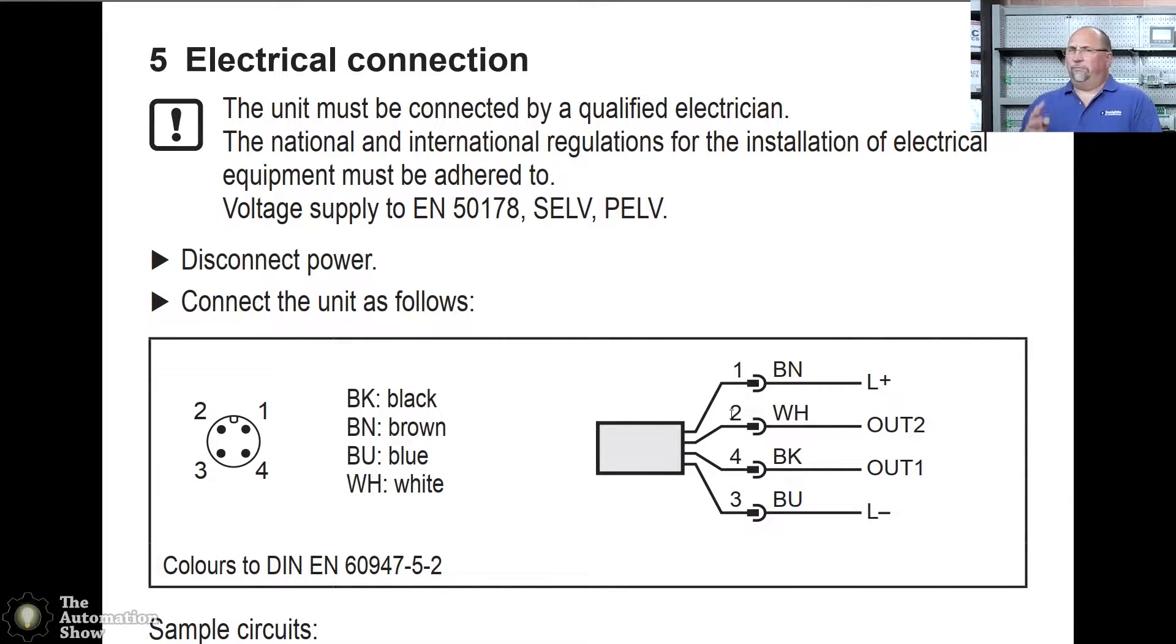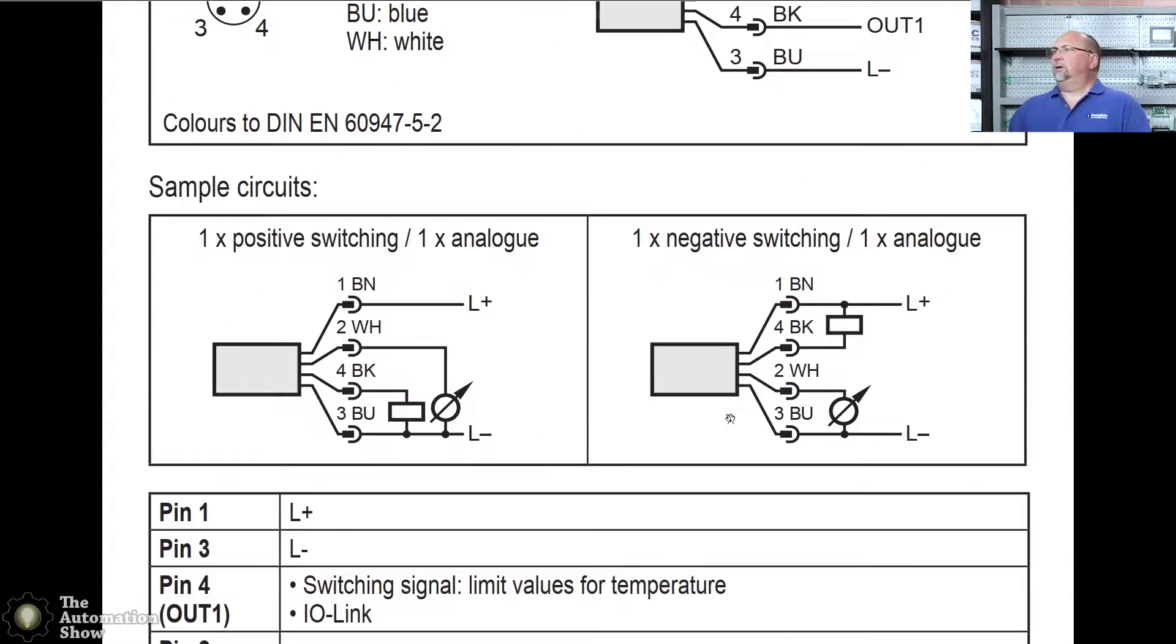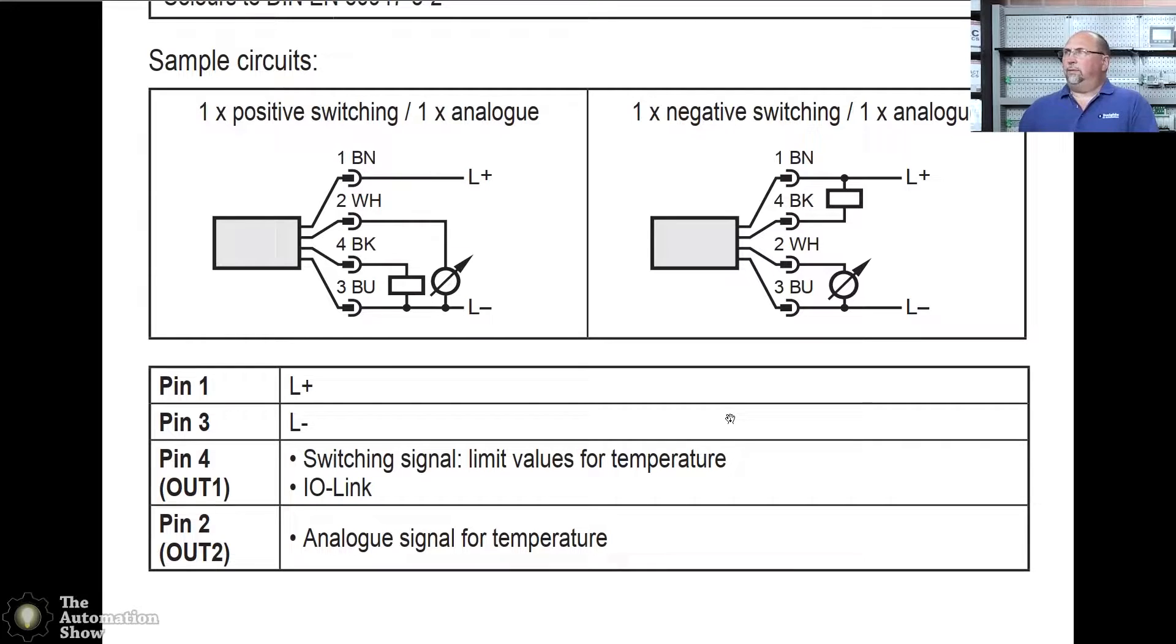Let's take a look at the wiring. We have four wires: brown which is positive, blue which is negative, black which is output one digital output, and white which is output two the analog output. If we look at this sample circuit here, we can see that if we have a sourcing output, we're going to want to use the black as a digital output - it's going to be sourcing power, PNP. And then we'd use the white as the analog output. This sensor does support IO link and we will be covering that in a future video. But I just thought trying to learn all of that while trying to learn how to use the sensor was just too much for one show.